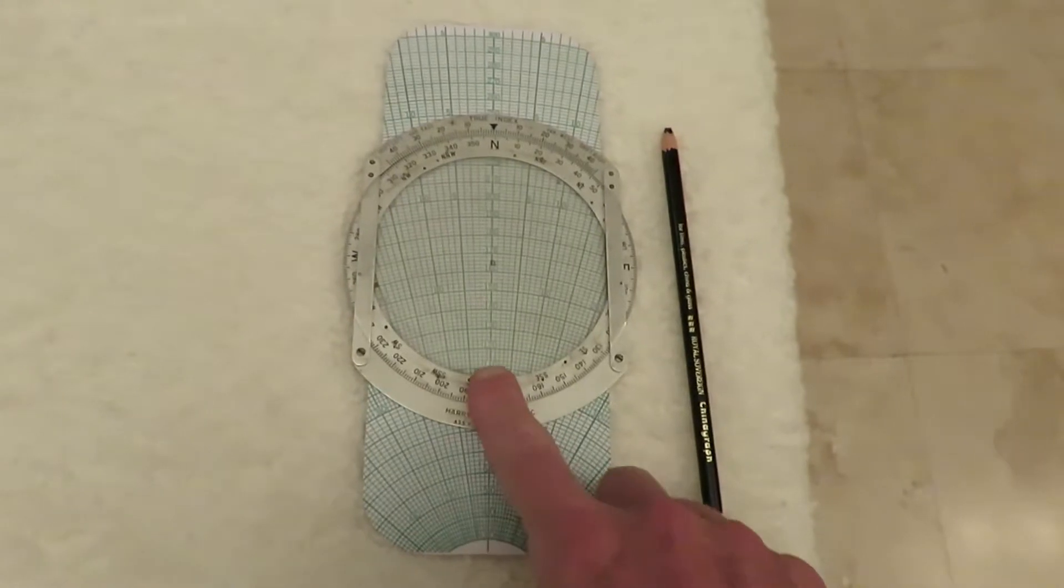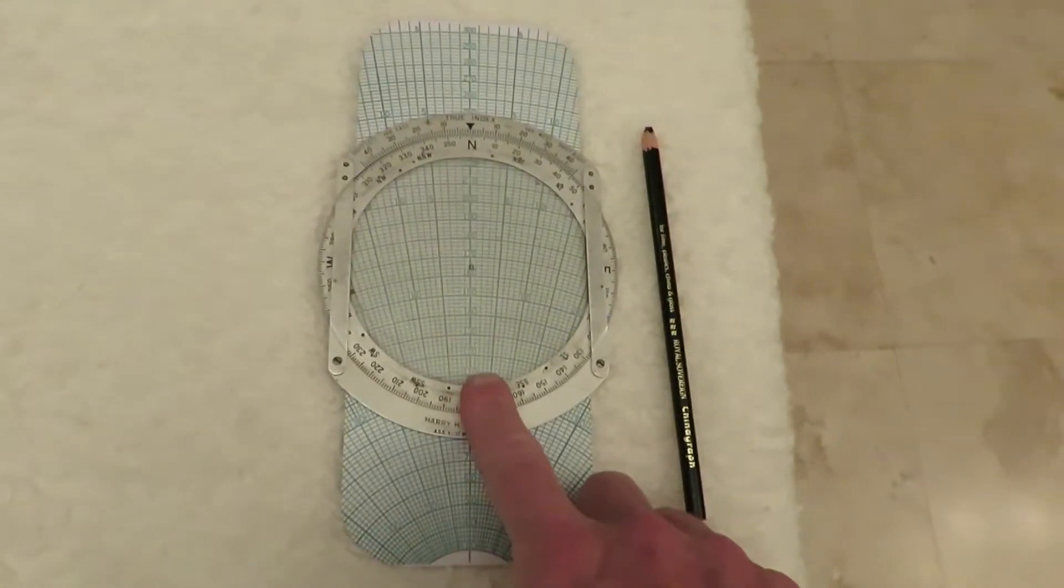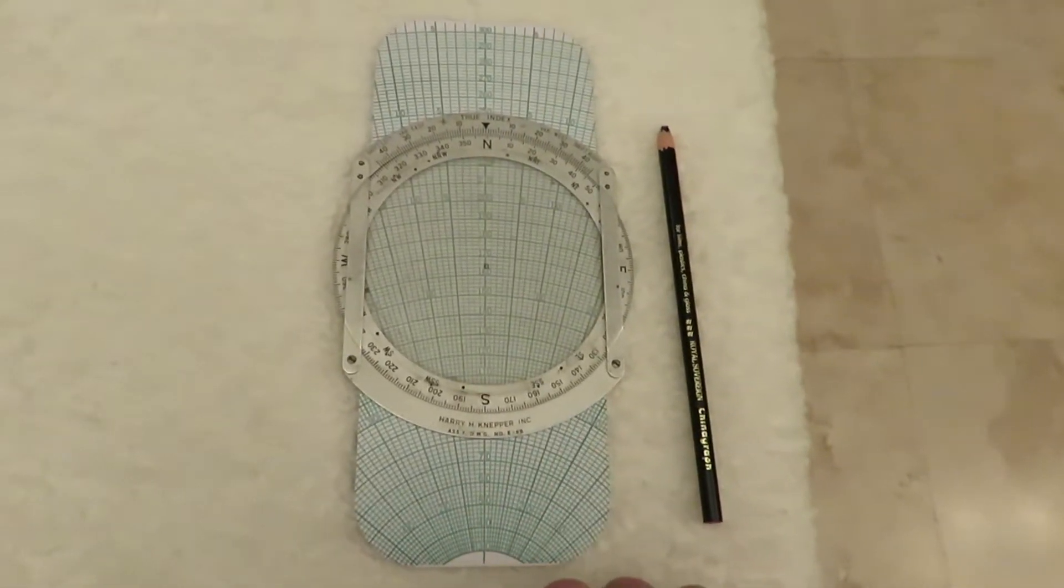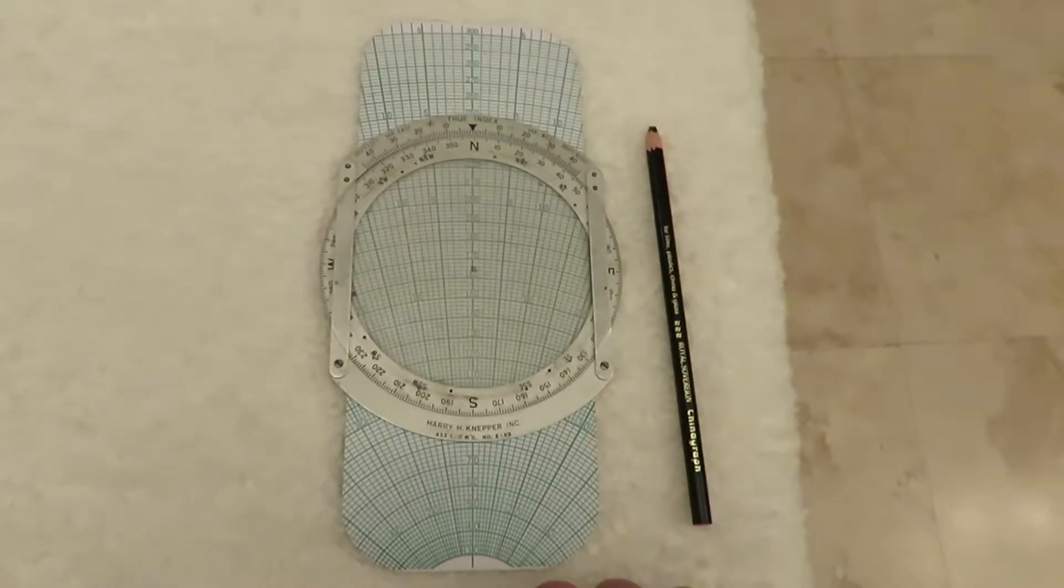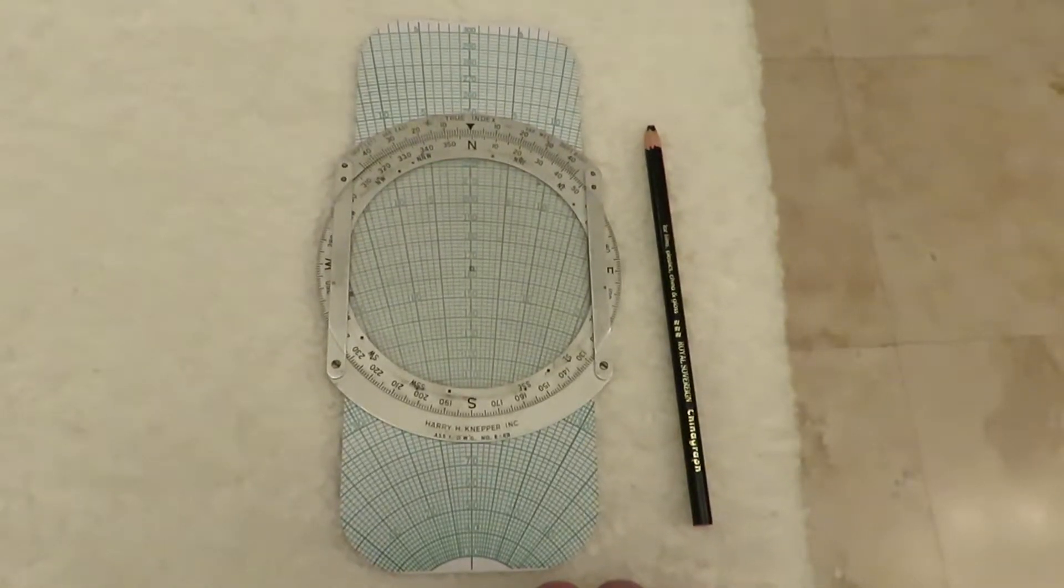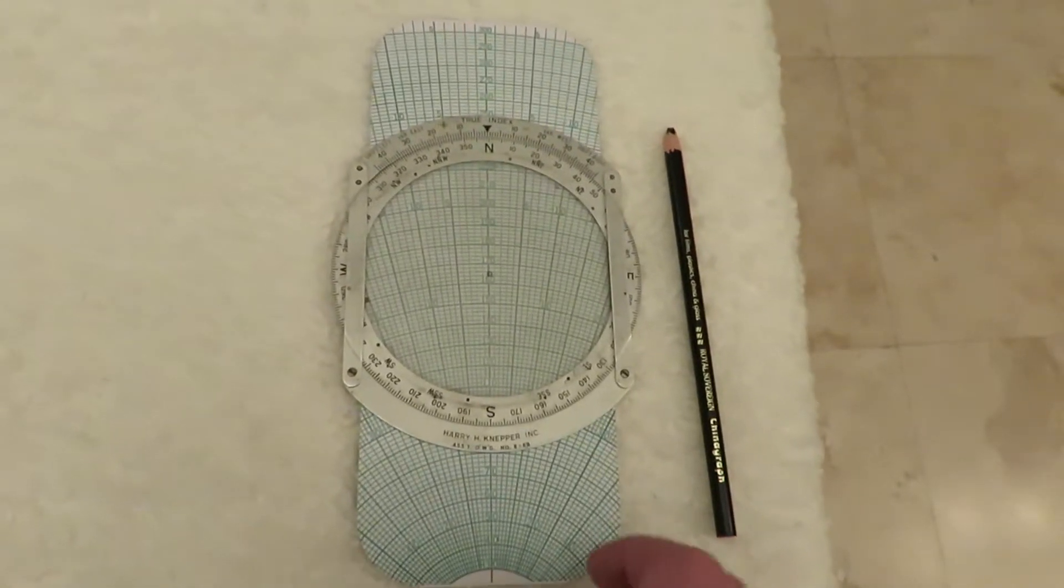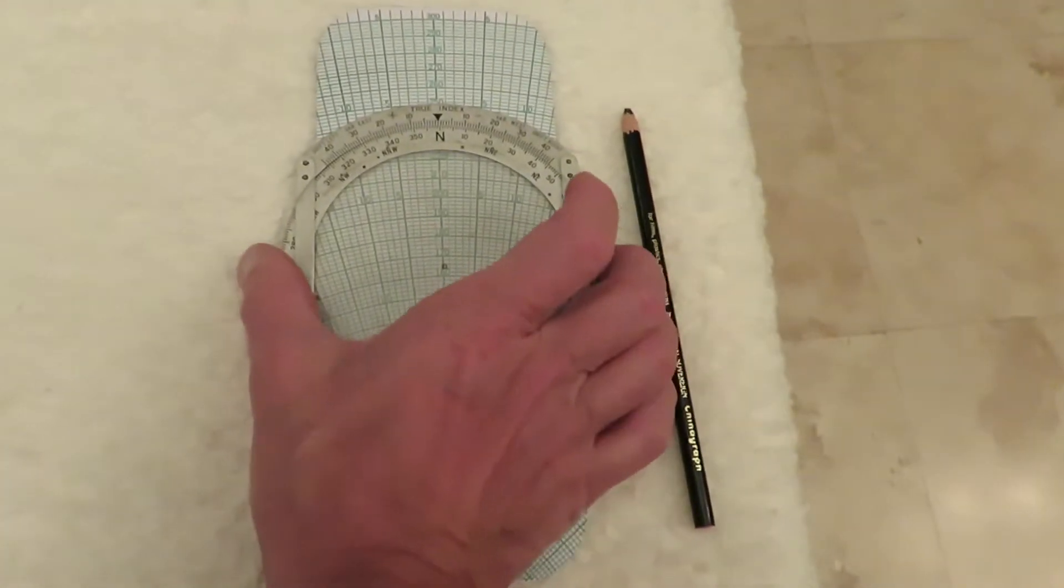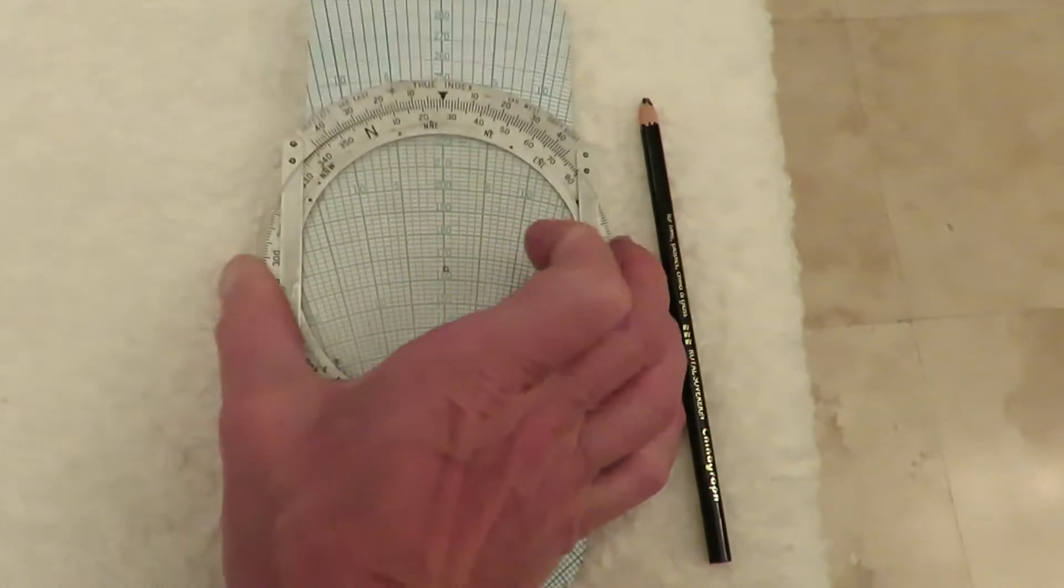This is an E6B computer, and if you are a pilot, you will recognize this instantly. Here is an example of how the wind's effect on heading and ground speed can be determined. First, you turn the wheel to the bearing of the wind direction. In this case, we'll say 40 degrees.